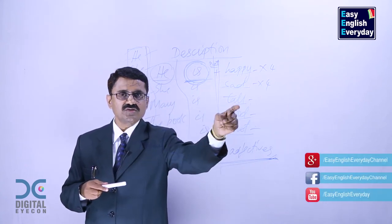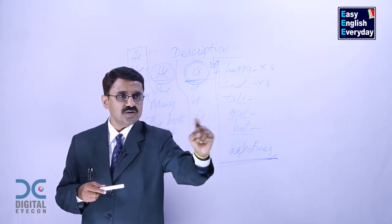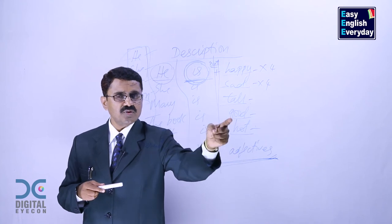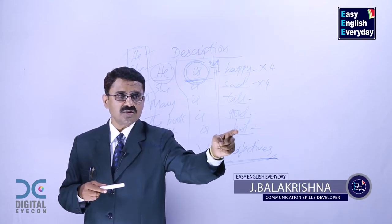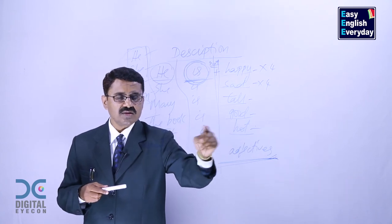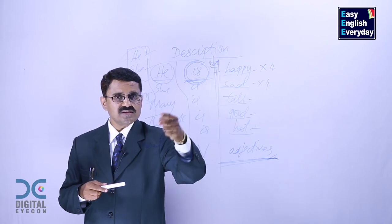Mary is tall. Mary is not tall. Is Mary tall? Isn't Mary tall? The book is good. The book is not good. Is the book good? Isn't the book good? It is hot. It is not hot. Is it hot? Isn't it hot? She is simple. She is not simple. Is she simple? Isn't she simple?